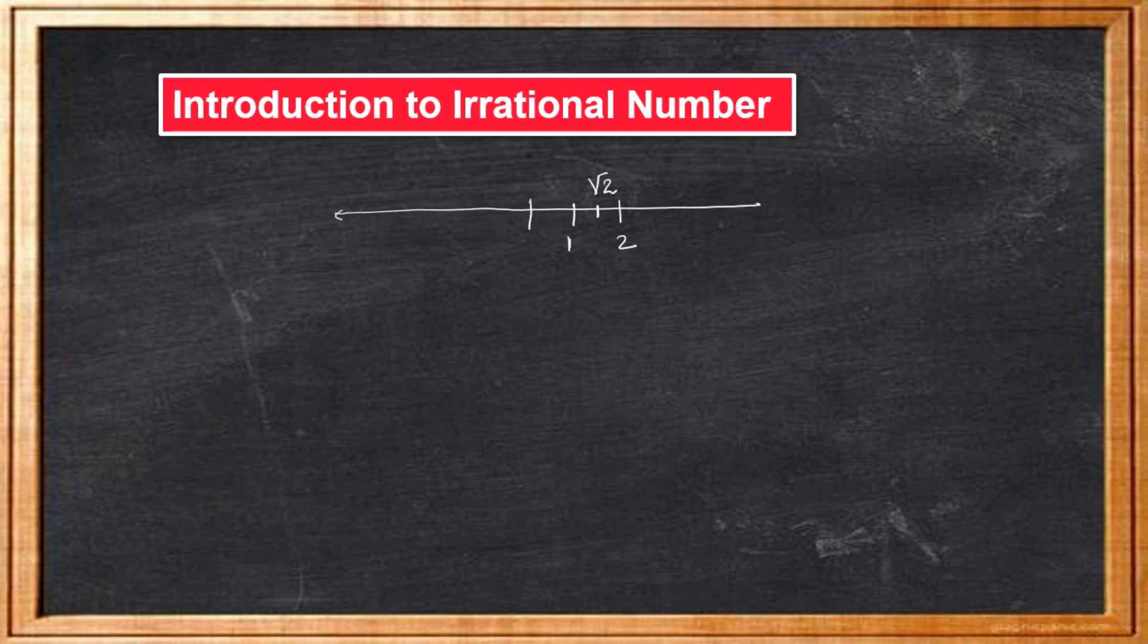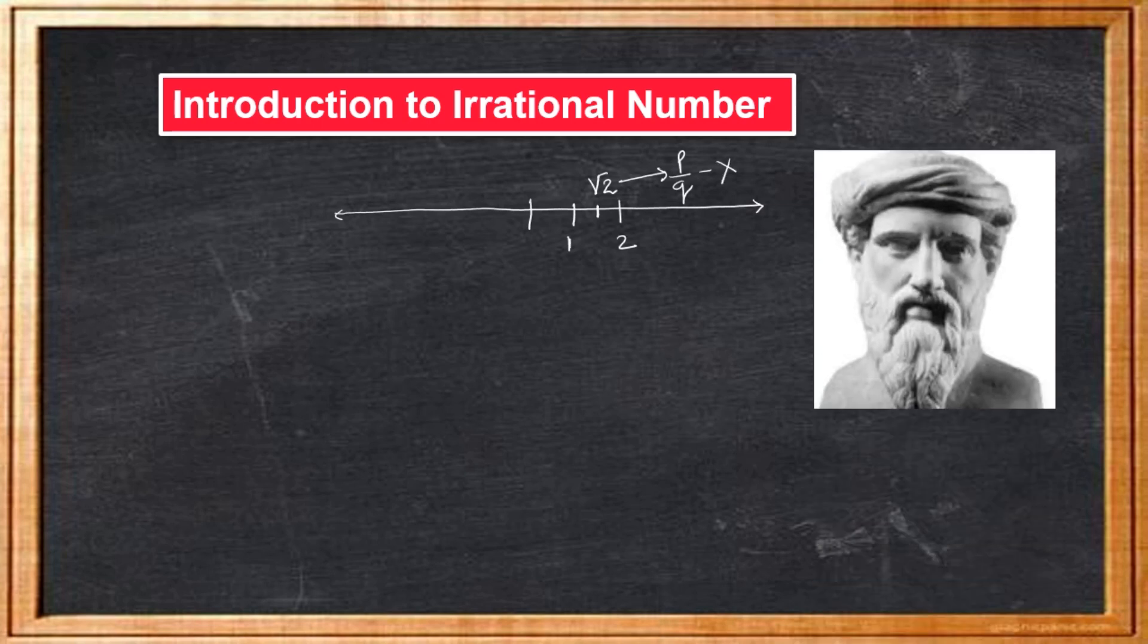Apart from the numbers which are in p by q form, there are some numbers which are not of this form. The famous mathematician and philosopher Pythagoras was the first to discover the numbers which were not rationals. He discovered these numbers around 400 BC. These numbers are called irrational numbers because they cannot be written in the form of ratio of integers.